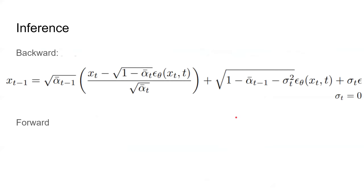For the inference, I want to talk about two formulas. The first one is a backward step, but this is not the same as the training backward procedure — now it's the inference procedure. As you can see, sigma_t is equal to zero. This is because we don't want stochastic results in our final output. By setting sigma_t to zero, the generated result will be deterministic — in fact, everything in the procedure will be deterministic.